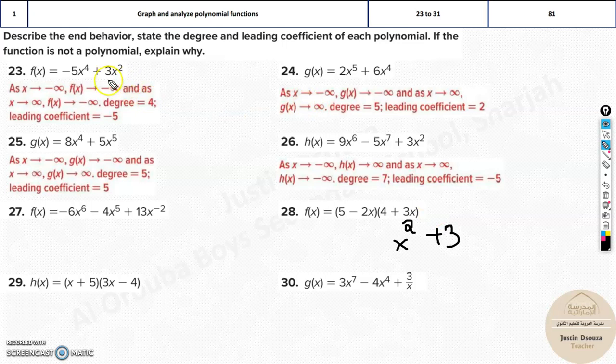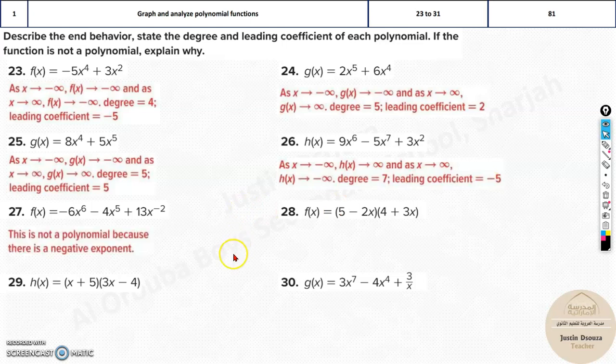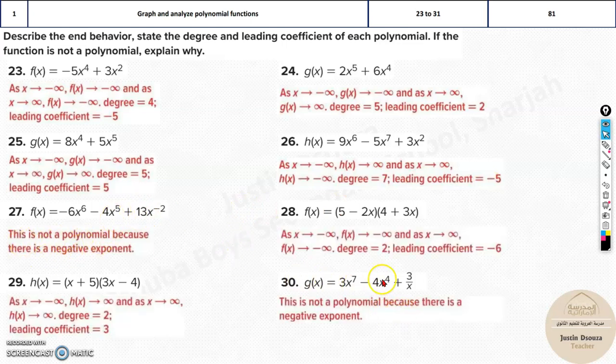Now, if it is having any negative power or it's a fraction, fraction means it's negative power itself when you bring it up. So they are not polynomial equations. So this is not a polynomial because there's a negative exponent. This is also not a polynomial. Why? Because there's a negative exponent.